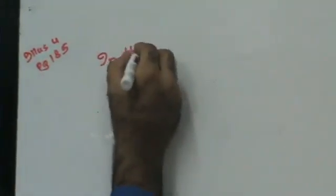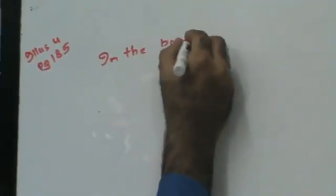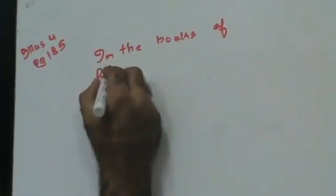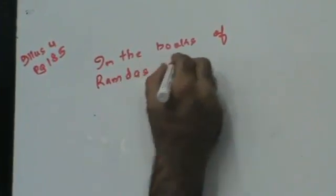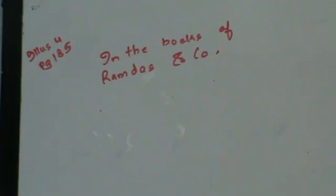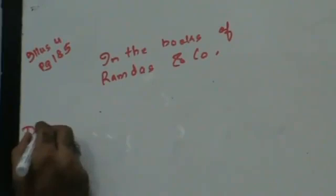Ramdas and Company of Mumbai consigned 50 bales of cut-piece cloth at 700 each to Mukherjee and Company. That means Ramdas is sending, so the consignor is Ramdas. We are working in the books of Ramdas and Company. In this lecture I am going to show you how to directly make a journal, so we are going to rule a journal.